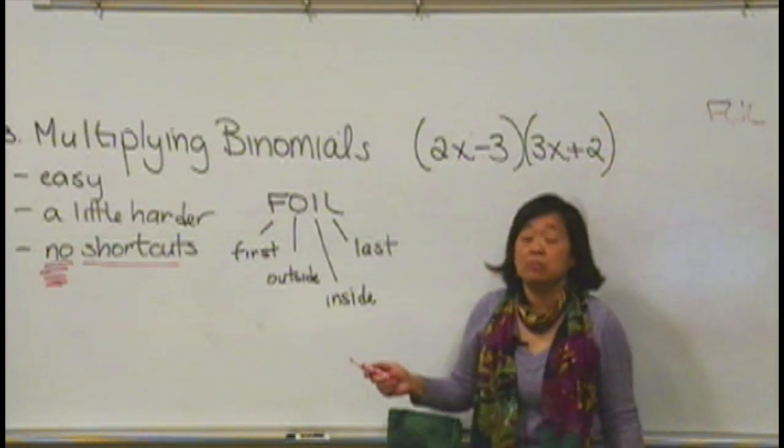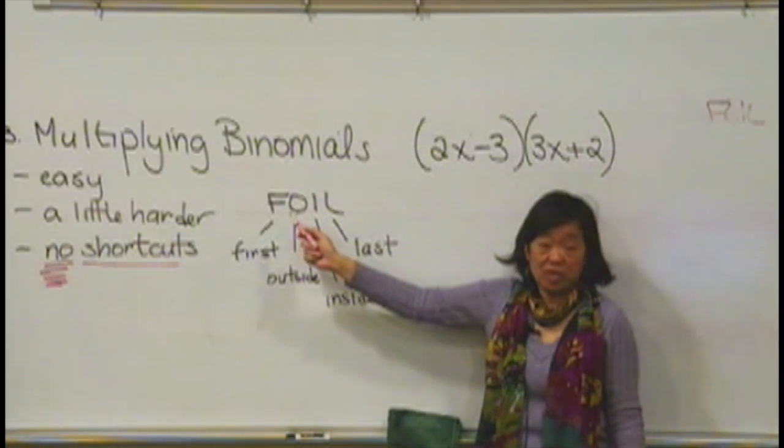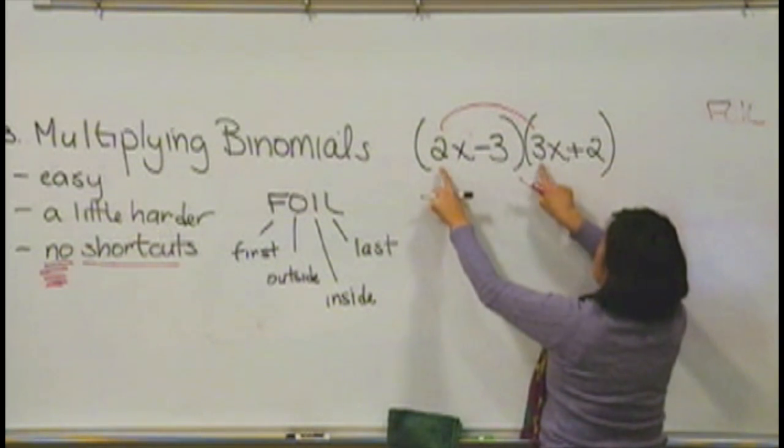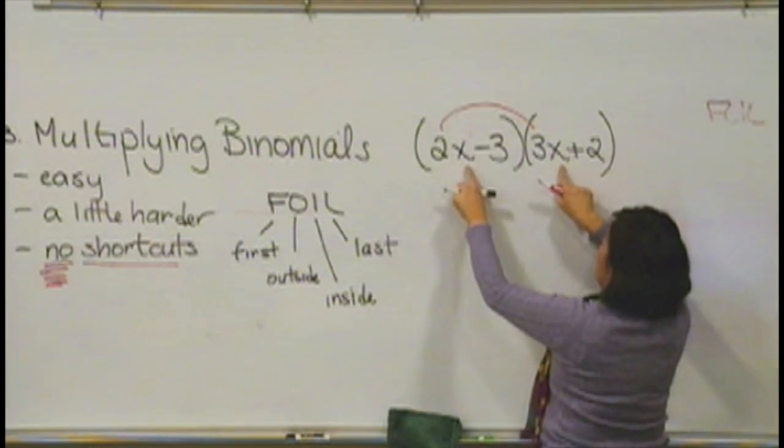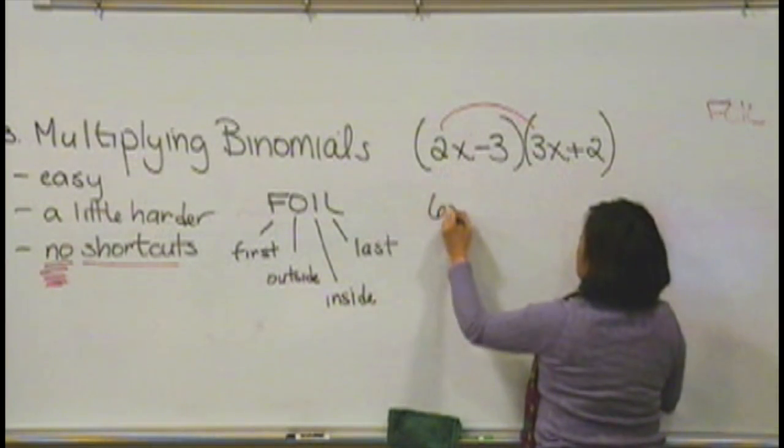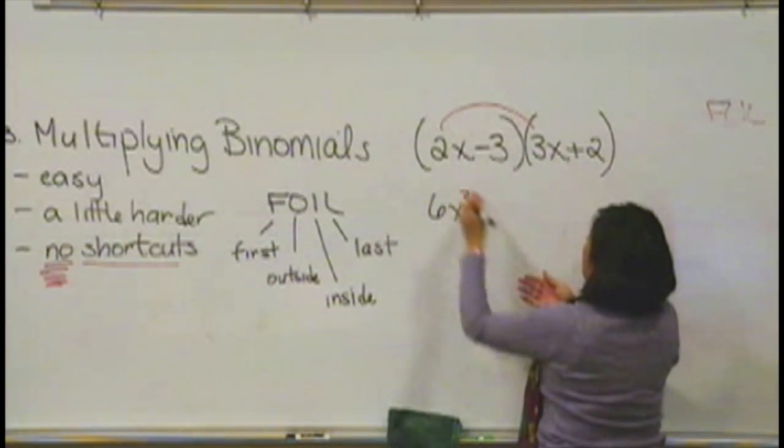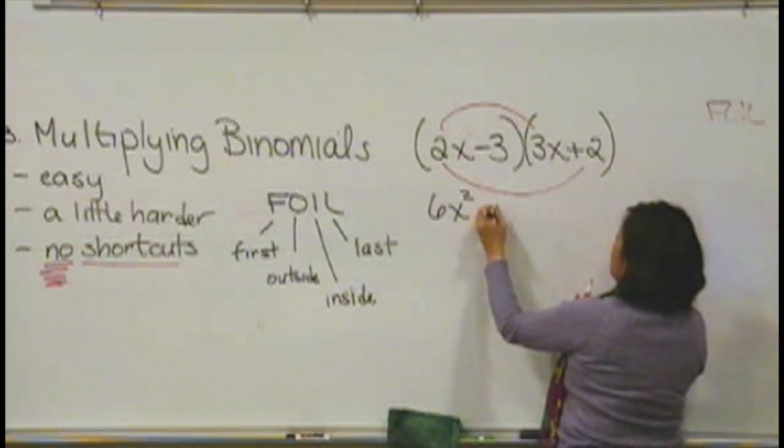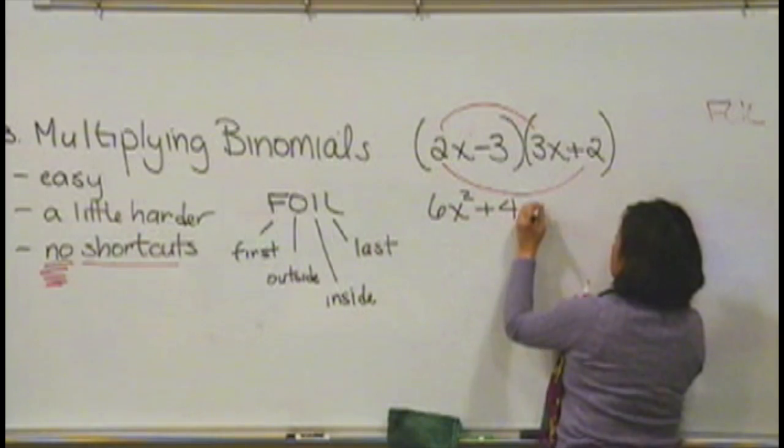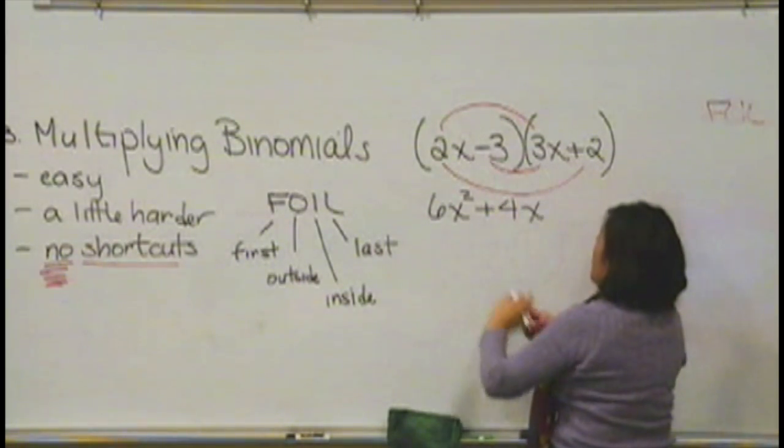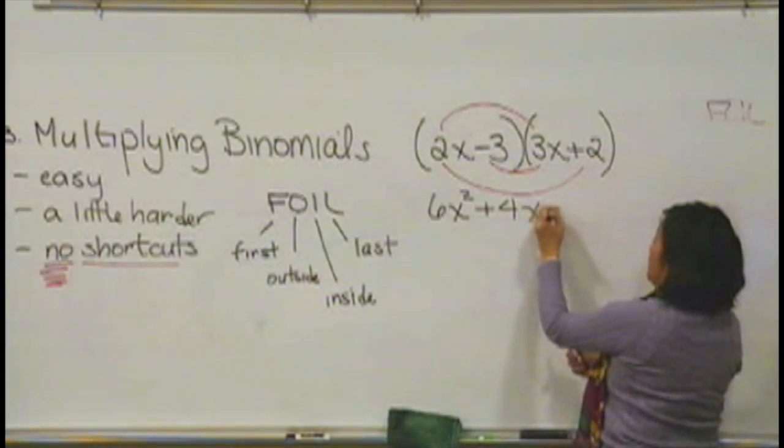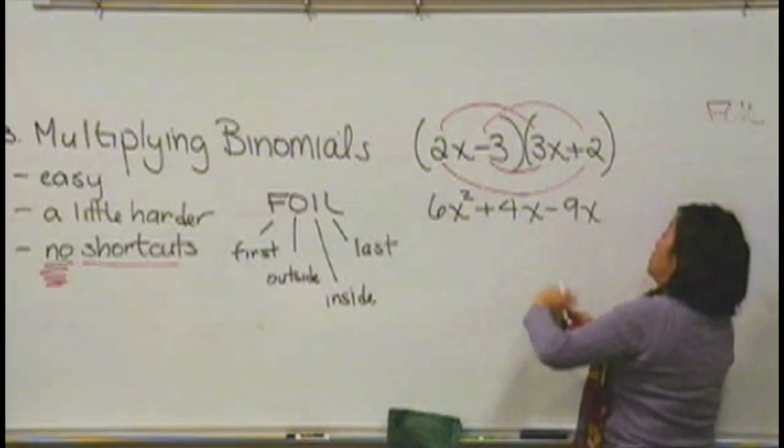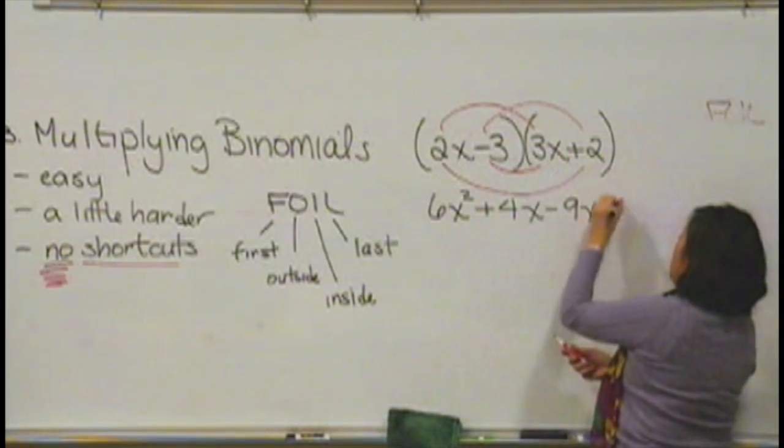Again, if you want to remember the acronym FOIL, we're going to go for the first. 2 times 3 is 6XX, in other words, 6x squared. The outside ones, 2x and 2, that's going to be a positive 4x. The inside ones, a negative 3 and a 3x, that's negative 9x. And finally, the last ones, so negative 3 times 2 is negative 6.